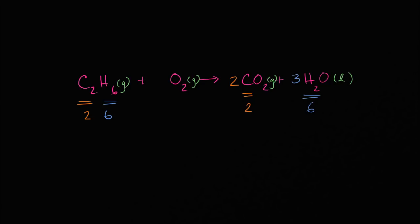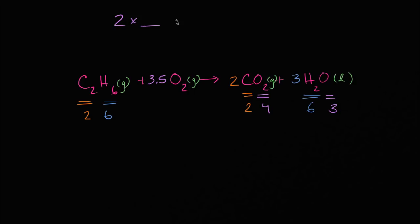Now let's go to the oxygens. On the left-hand side I have two oxygens. On the right-hand side I have two times two — so four oxygens from the two CO2 molecules — plus three water molecules each with one oxygen atom, giving three more. So on the entire right-hand side I have seven oxygen atoms, but on the left-hand side I only have two. Two times what equals seven? Two times 3.5 equals seven, so I multiply the O2 by 3.5. Now I have seven oxygen atoms on both sides.